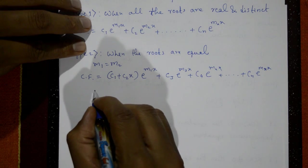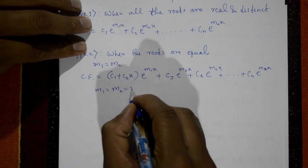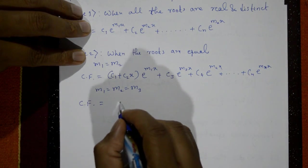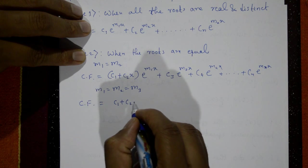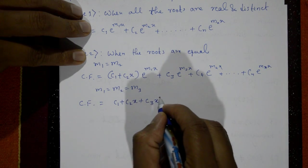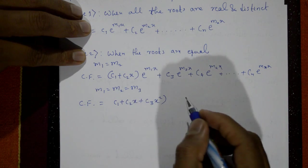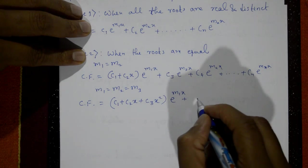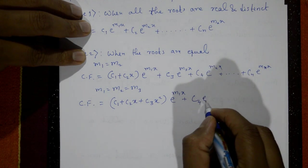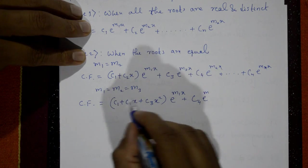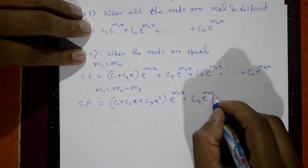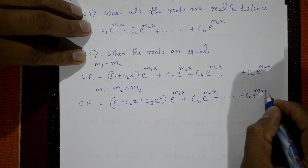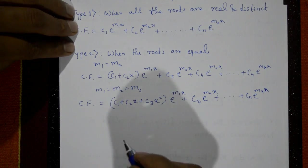Suppose three roots are equal — m1, m2, and m3 are all equal. Then the complementary function is (c1 + c2·x + c3·x²)·e^(m1·x) + c4·e^(m4·x) + ... + cn·e^(mn·x). This is Type 2.